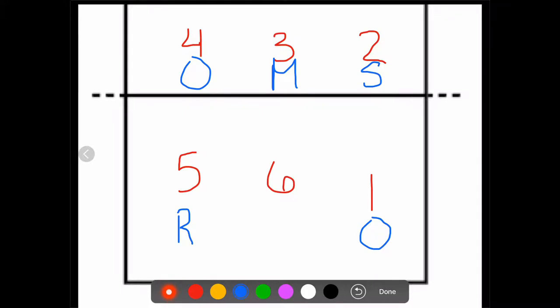And last but not least, we have the six, which is also known as the other middle, because they substitute out. The middles are always going to be across from each other, no matter what on the court. The outsides are going to be across from each other on the court. And the setter and the right side are going to be across from each other. And then there you have it. You have R-O-M-S-O-M.